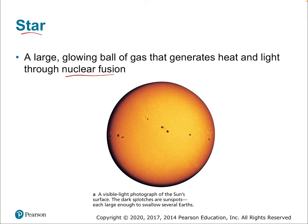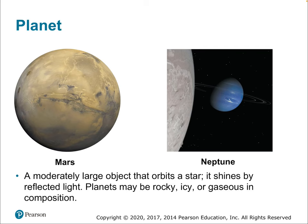Planets are another focus. Mars is a terrestrial planet; Neptune is a Jovian gas planet. A planet is a moderately large object that orbits a star and shines by reflected light in the visible spectrum — though planets also glow in infrared. Planets may be rocky, icy, or gaseous. A moon, or natural satellite, is an object that orbits a planet.